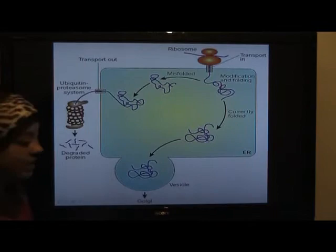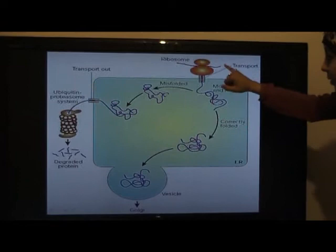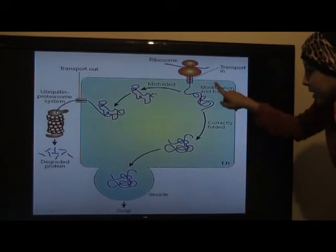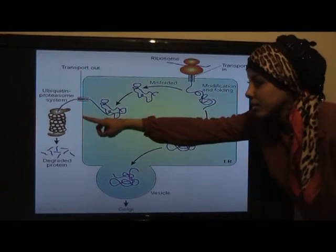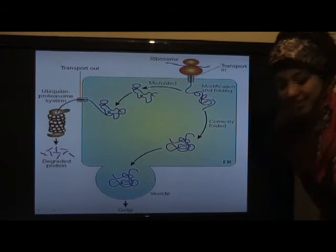As you can see here, translation of the protein occurs from the ribosome and is transported into the endoplasmic reticulum. It's folded and modified. If it's correctly folded, it goes into the Golgi apparatus to be further modified and produced. If it's misfolded, however, then it's transported out and into the ubiquitin proteasome system, and then it becomes degraded.